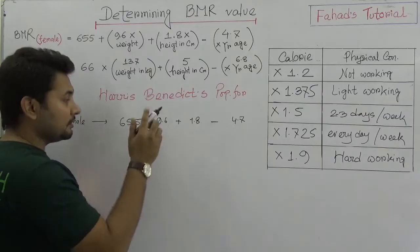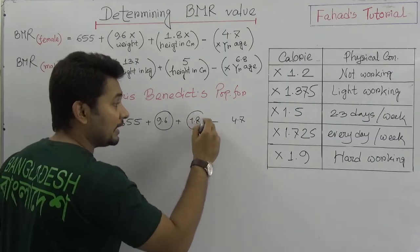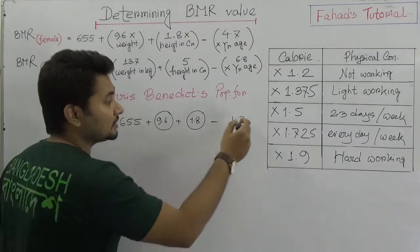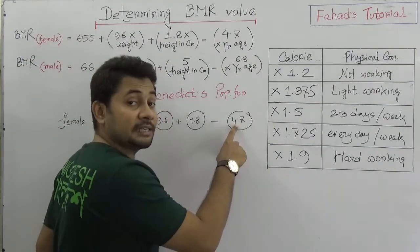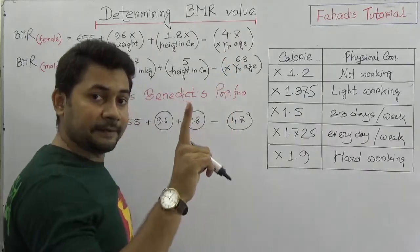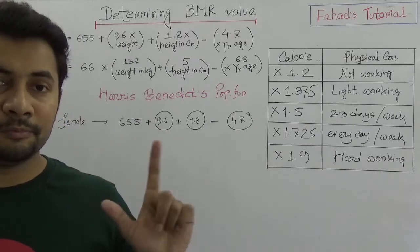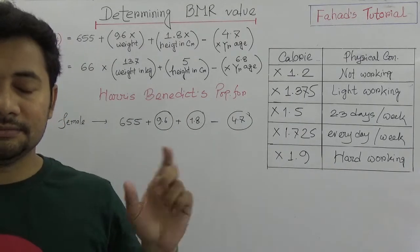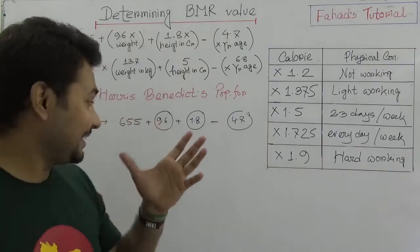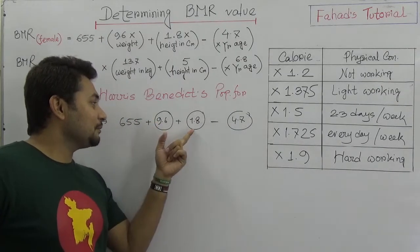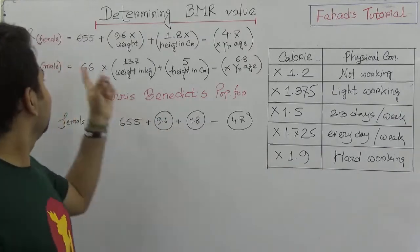In case of female, remember: 9.6 is multiplied with body weight, 1.8 is multiplied with height in centimeters, and 4.7 is multiplied with age in years. So if somebody is 60 years old, then 4.7 times 60. The values to memorize for female are 9.6, 1.8, and 4.7.